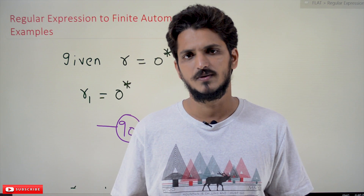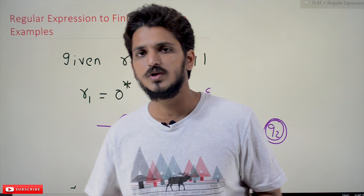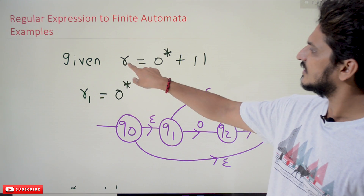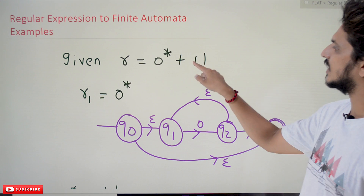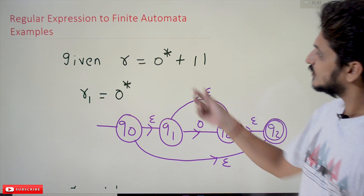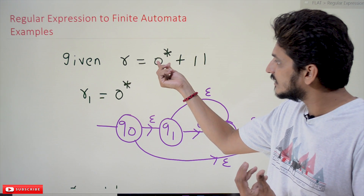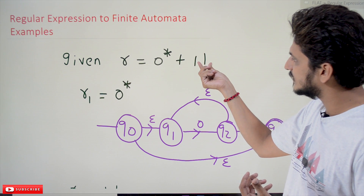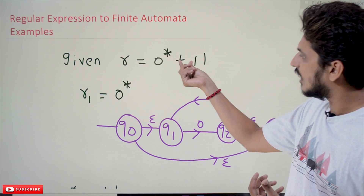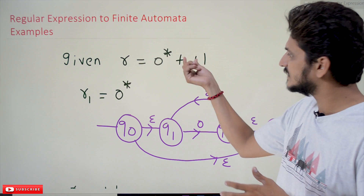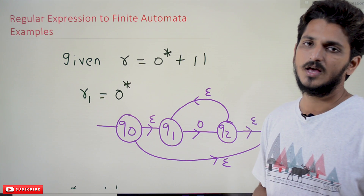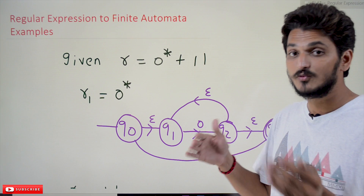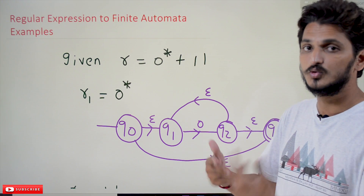Coming to today's class, let's take this example. The regular expression r is equal to 0* + 11. We already discussed how to write the finite automata for 0*, for 11, and for the plus (union) operator. Now let's write each sub-expression separately and then join them all together.